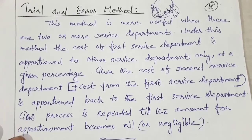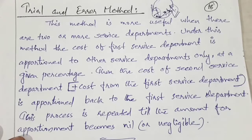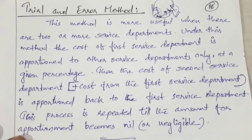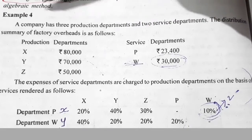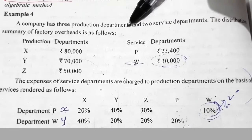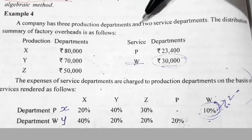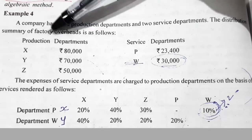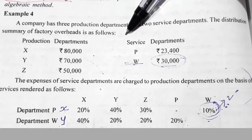Let us explain the Trial and Error Method of Secondary Distribution of Overhead with the help of a problem. A company has three production departments and two service departments. The distribution summary of factory overhead is as follows.